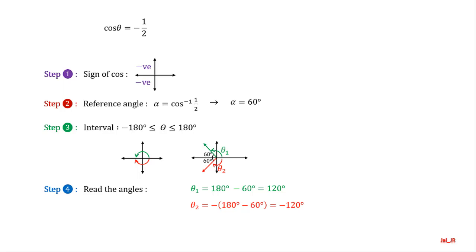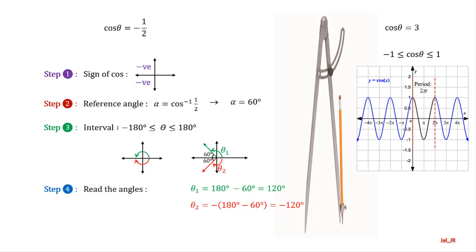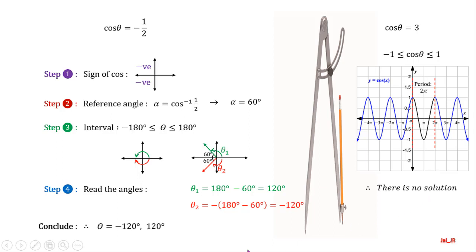The second basic trigonometric equation to solve is cosine of theta equal to 3. As we know, the value of cosine of theta ranges from negative 1 to 1. We can refer to the graph of the cosine function here. As you can see, the value of cosine of theta never goes beyond negative 1 and 1. So for this equation, there is no solution. The solutions of theta are negative 120 and 120 degrees.